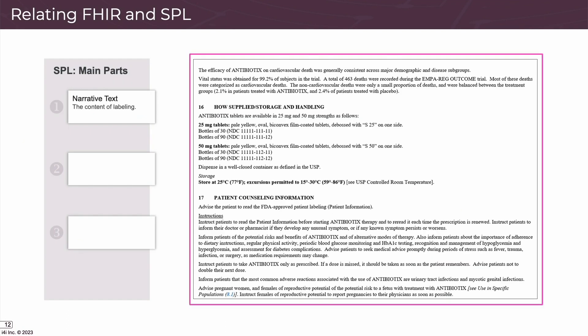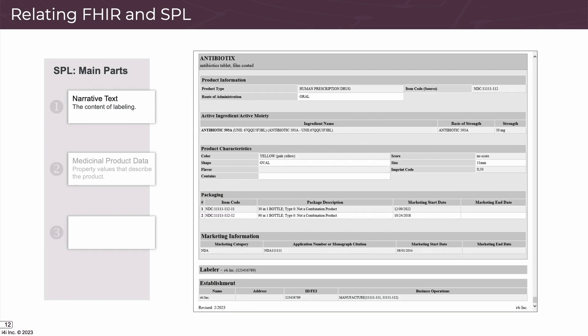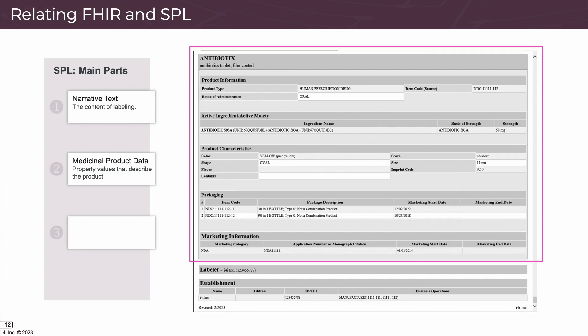The easiest way to understand a FHIR EPI is to relate it to an SPL. We can think of a drug product label SPL as being made of three parts: the narrative text — the sections, paragraphs, lists, and tables; the medicinal product data — the dosage form, strength, route of administration, ingredients, and packaging; and the organization data — the labeler and establishment names, addresses, unique identifiers, and contact information.